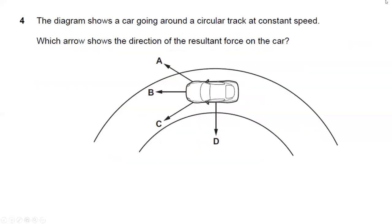Question four: a car goes around a circular track at constant speed. Which arrow shows the direction of the resultant force? The resultant force on the car is the centripetal force directed toward the center of the track. The best answer is A.